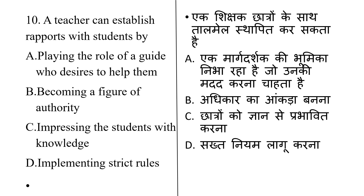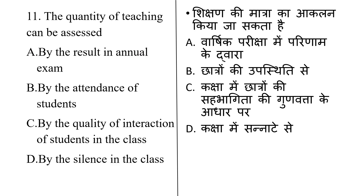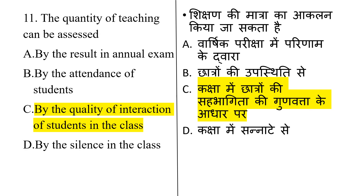A teacher can establish rapport with students by: playing the role of a guide who desires to help them, becoming a figure of authority, impressing students with knowledge, or implementing strict rules. The correct answer is Option A: playing the role of a guide who desires to help them. Teaching quality can be assessed by: results in annual exams, attendance of students, quality of interaction of students in class, or silence in the class.